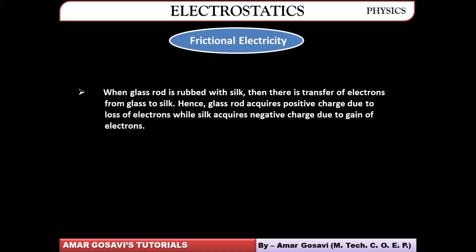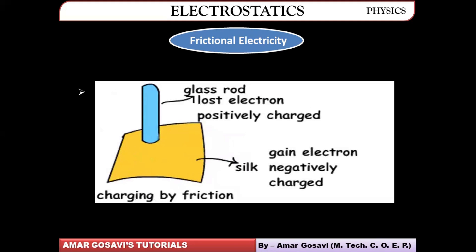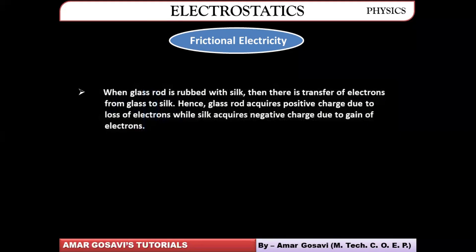When a glass rod is rubbed with silk, there is basically a transfer of electrons from glass to silk. Therefore, the glass rod acquires positive charge, whereas the silk, because it receives electrons, acquires negative charge. The glass rod is losing electrons and silk is gaining electrons — that's how they get positively and negatively charged.